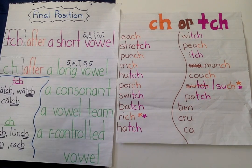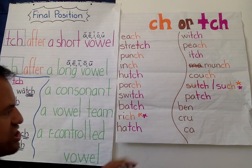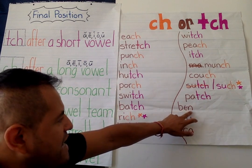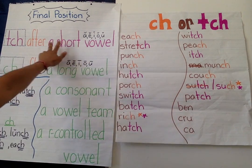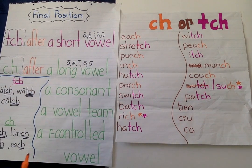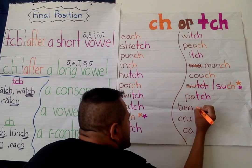"Bench." B-E-N. N — not a vowel, it's a consonant. So it's going to be C-H, "bench." Really looking at that last letter before the ending.